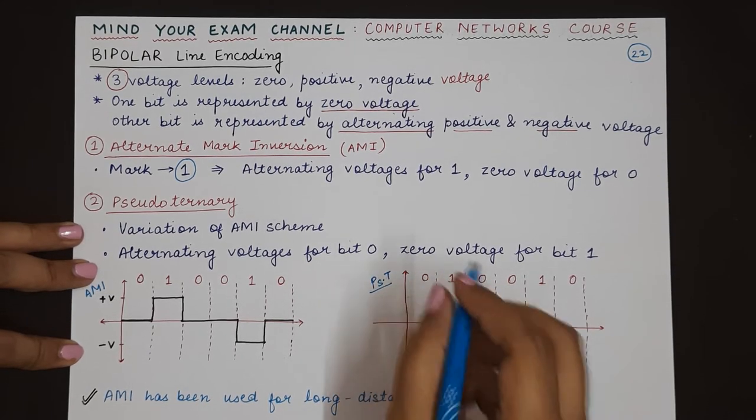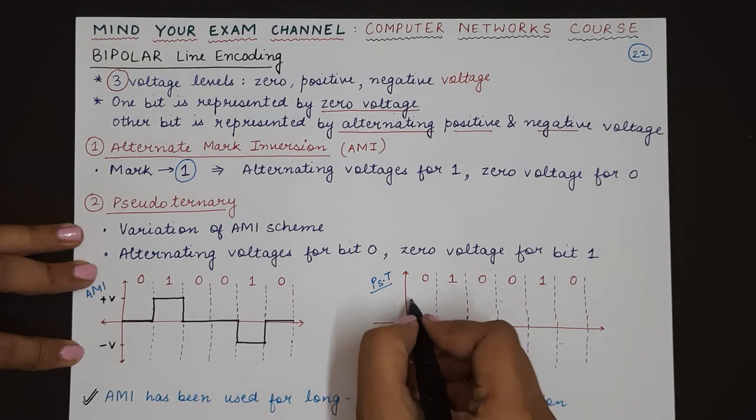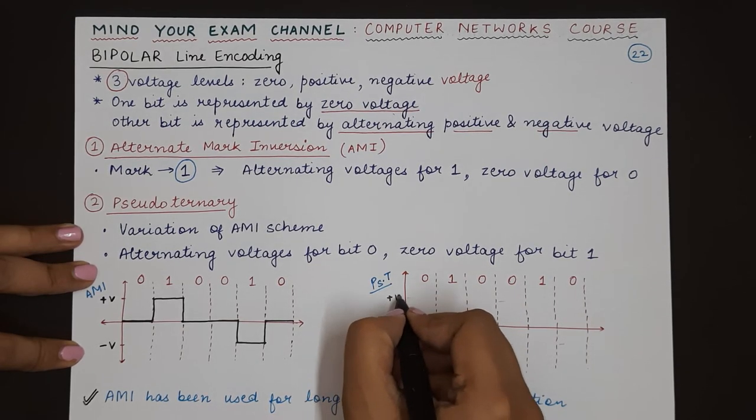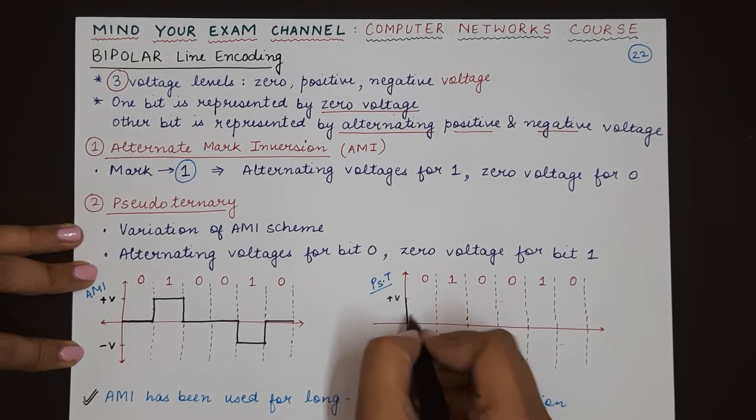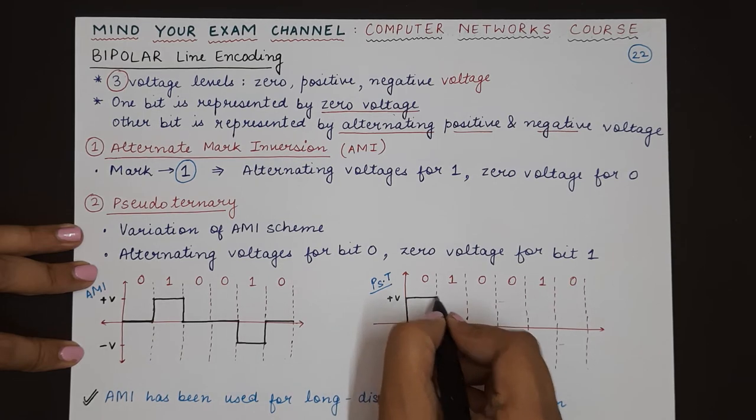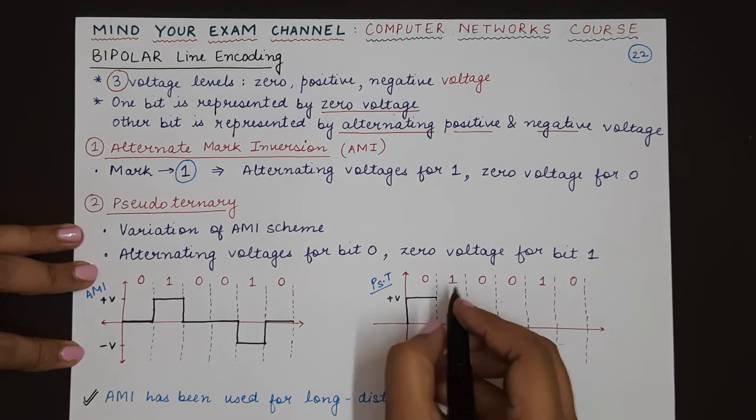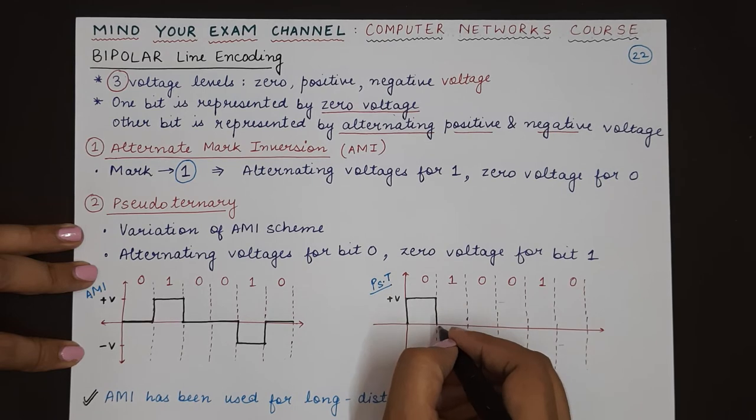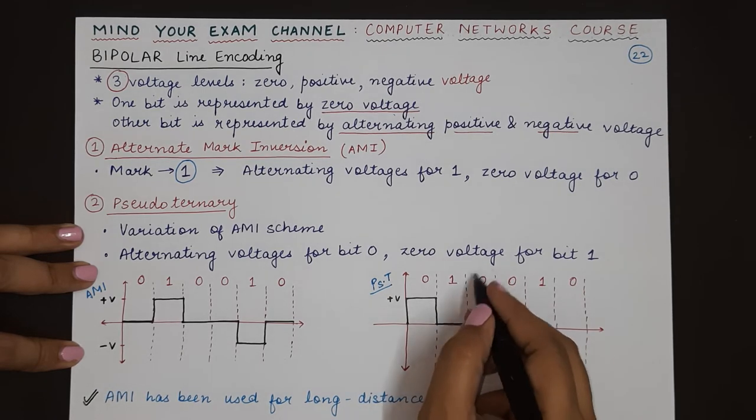zero will first be represented by a positive voltage. This is plus V. We go from zero to positive voltage, then the next is one. So we go to zero voltage. Next, the bit is zero, so this time